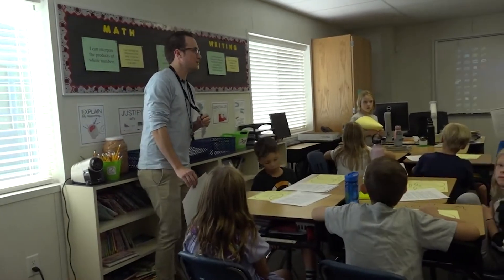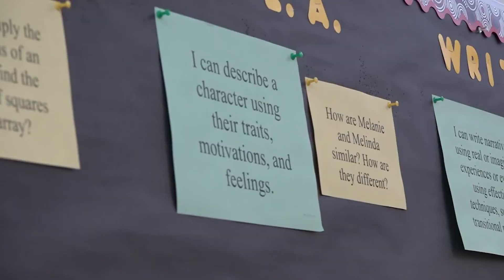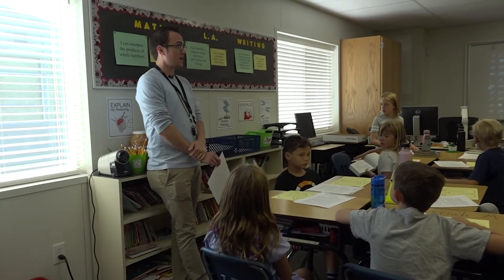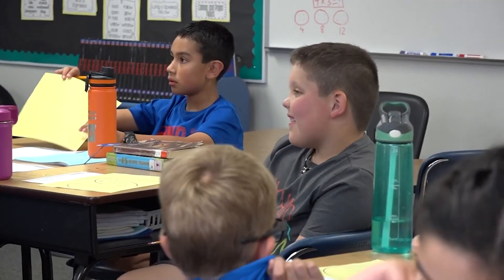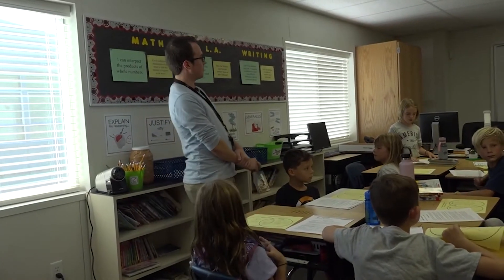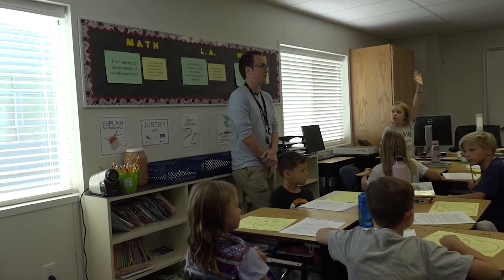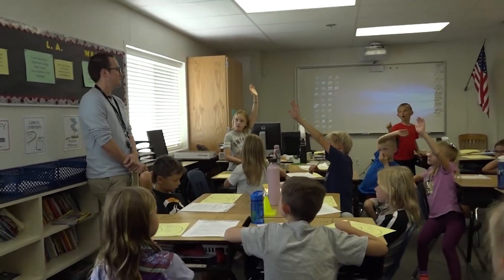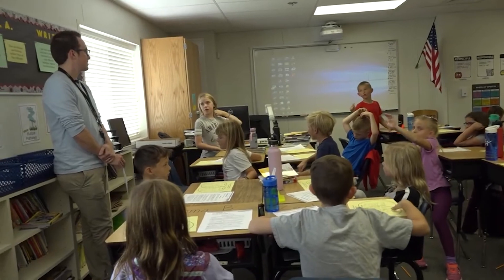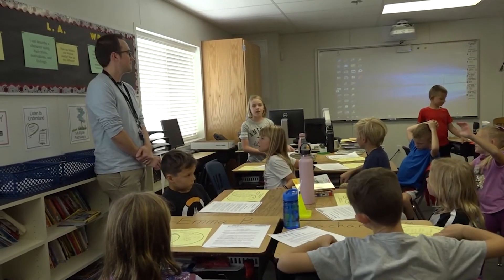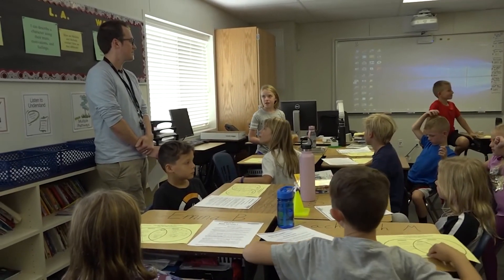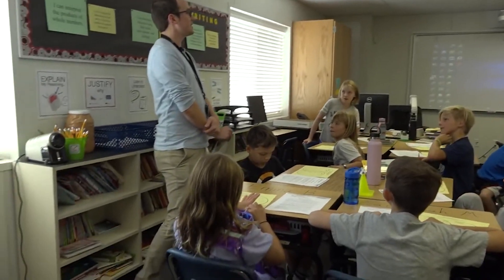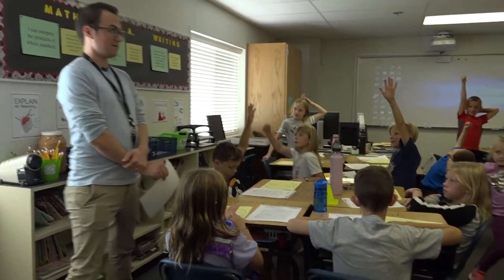So today we're going to continue to talk about describing characters using their traits, motivations, and feelings. Yesterday we read a story about a human girl named Melanie and a mermaid named Melinda. Who can tell me what happens in that story, just to remind us what happened? Josie? Melanie is walking on the beach and she meets Melinda.